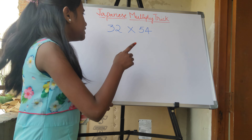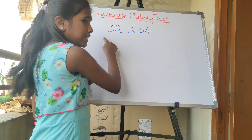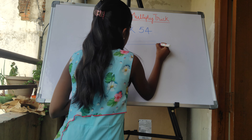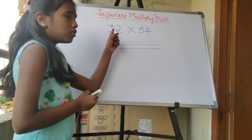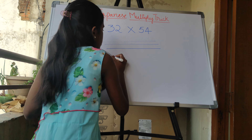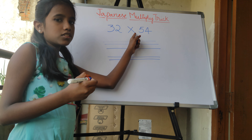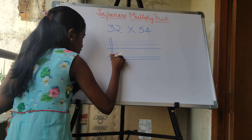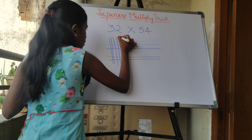Our next example is 32 into 64. First we have to draw 3 straight lines: 1, 2, 3. Next, we have to give gap and draw 2 straight lines: 1 and 2. Next, we have to draw 6 cross lines: 1, 2, 3, 4, 5, 6.